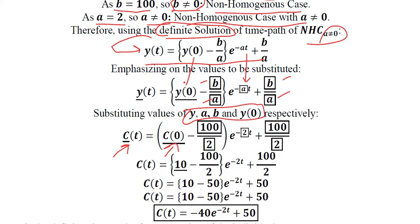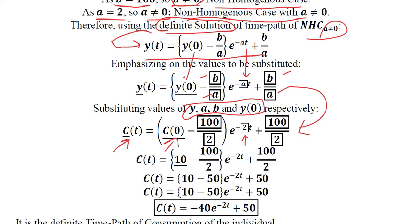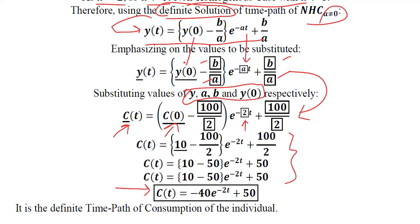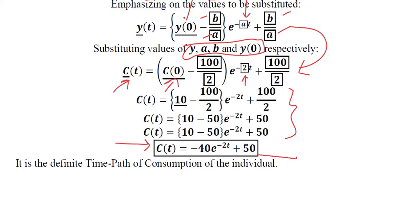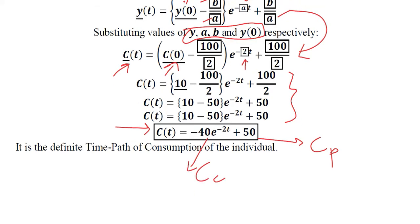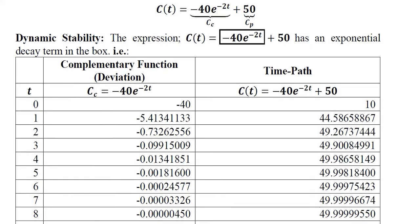This is 100 over 2, and this again is 100 over 2, which is b over a. So a substitutes here and becomes 2. Through simple algebra we arrive at the final solution, which is the time path of the individual's consumption. This is the particular integral — the equilibrium part — and this is the complementary function — the deviation part.